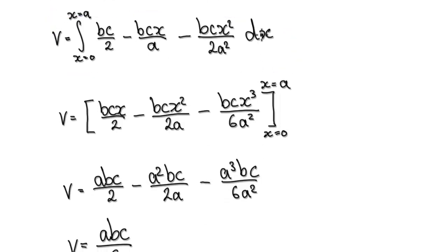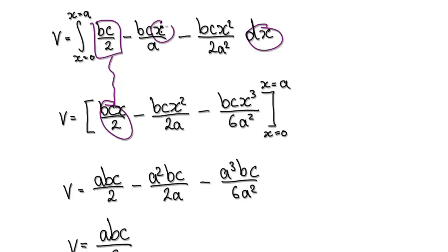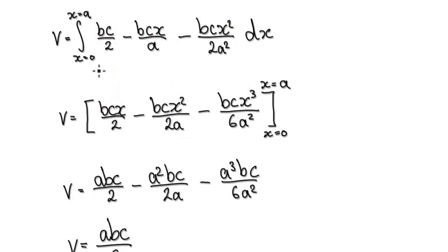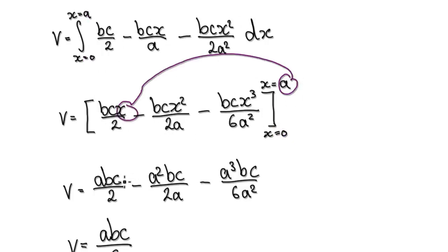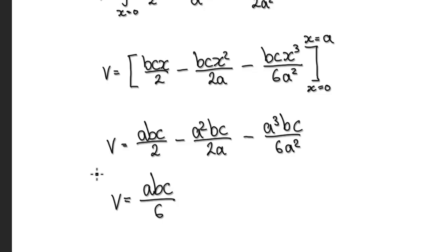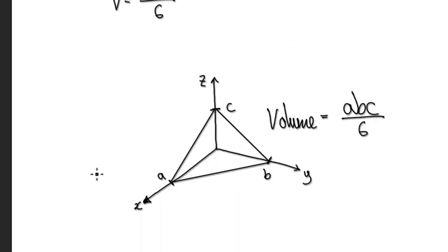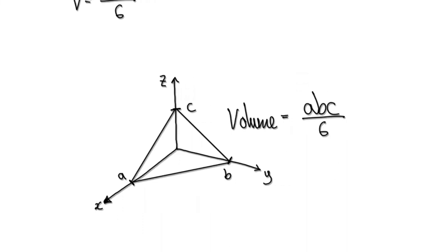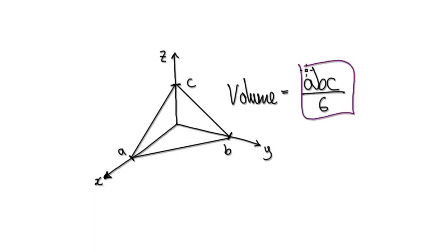Now integrate with respect to x. Integrating gives: the x term becomes x squared, the next becomes x to the power of three, and so on. Evaluating from zero to a — substituting a in for x — gives a squared and a cubed terms. Tidying up, this gives a volume of exactly the same as in the previous video with double integration: volume equals abc over 6.